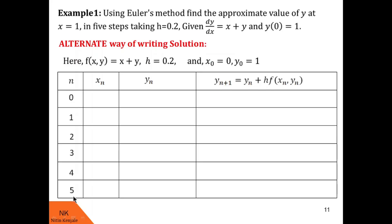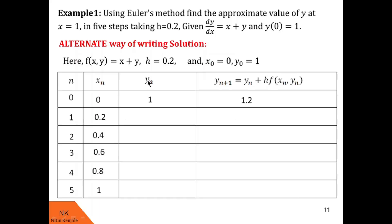These are the values of n: 0, 1, 2, 3, 4, 5. At n = 0, x0 = 0. Then x1 = x0 + h = 0.2, similarly x2, x3, x4, and x5 are filled in by adding h each time. Y0 is given as the initial value of y, which is 1. Substituting x0, y0, and h into the formula gives y1 = 1.2, which we write in the yn+1 column. Then we carry y1 = 1.2 into the yn column for n = 1.